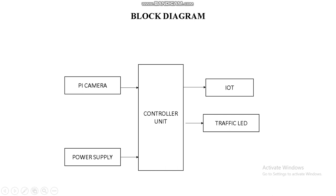This is our block diagram. The Pi camera or CCTV camera is used for capturing the video. If we already have a predefined video, we can directly upload it into the Raspberry Pi. Raspberry Pi then counts the number of vehicles present in that video, the count is uploaded to our IoT page, and depending upon the count and density, we control the traffic signal.